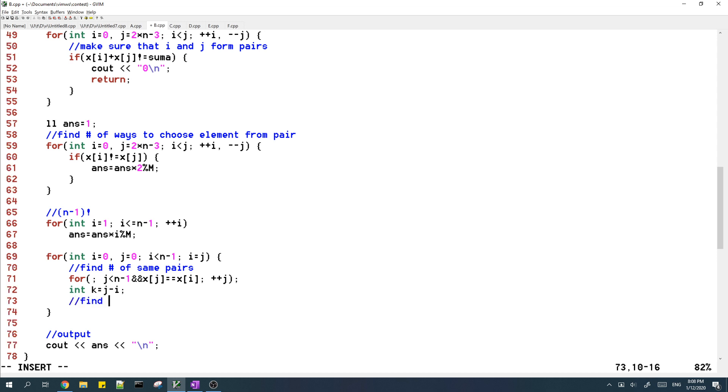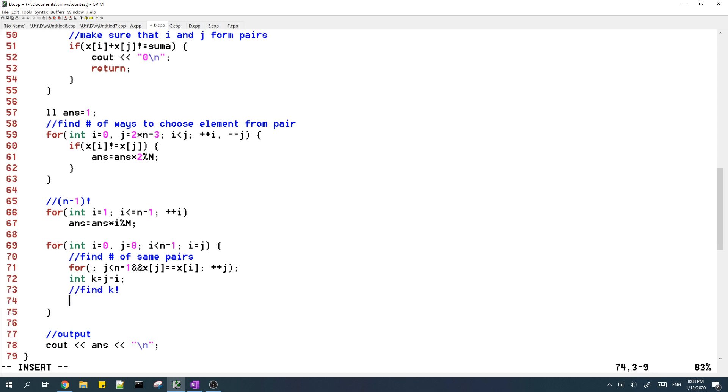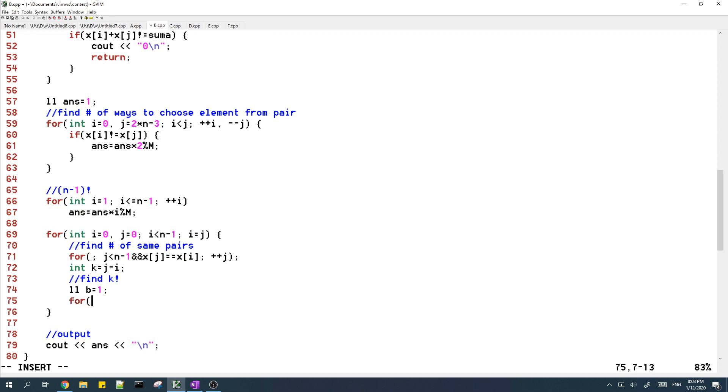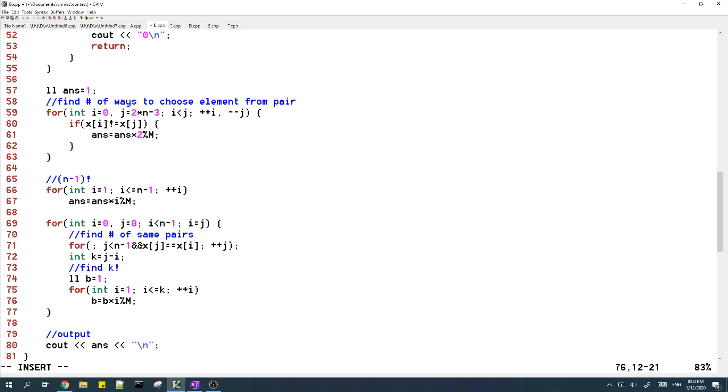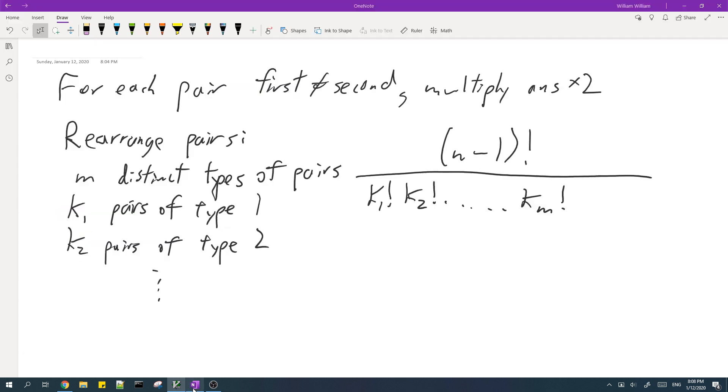Now we just find k factorial. Then we need to divide the answer by k factorial.